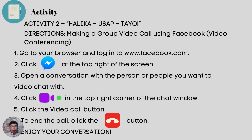Let's have another activity — Activity 2: making a group video call using Facebook. First, go to your browser and log in to www.facebook.com and click the Messenger icon at the top of the screen. Then open a conversation with the person or people you want to video chat with. Number 4: click the video call icon in the top right corner of the chat window. Number 5: click the video call button. To end the call, click the end call button. And as you go along with your conversation, enjoy talking with that person.